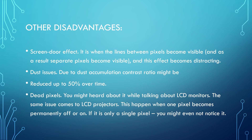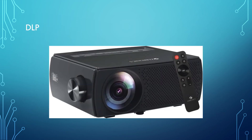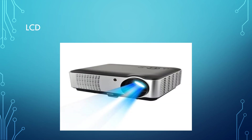Another issue is dead pixels. While talking about LCD monitors, the same issue comes to LCD projectors — this happens when one pixel becomes permanently off or on. If it is only a single pixel, you might not even notice it. This is how the DLP projector looks like, and LCD projectors look like this.